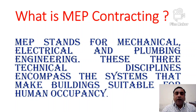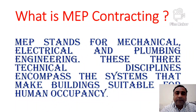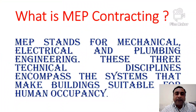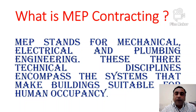Next is MEP contracting. MEP stands for Mechanical, Electrical and Plumbing Engineering. These three technical disciplines encompass the systems that make buildings suitable for human occupancy.